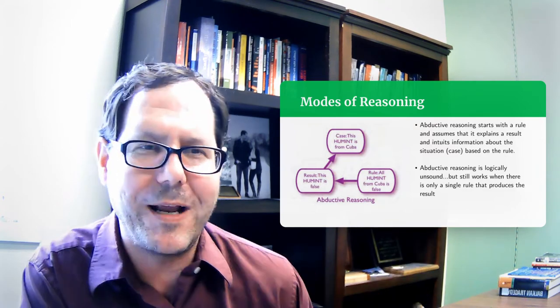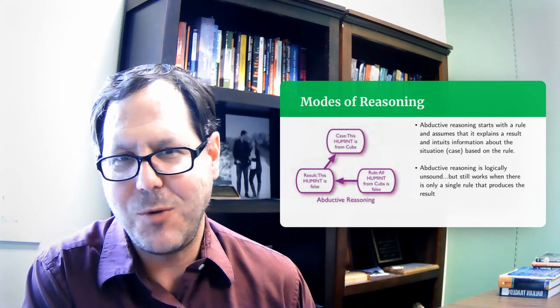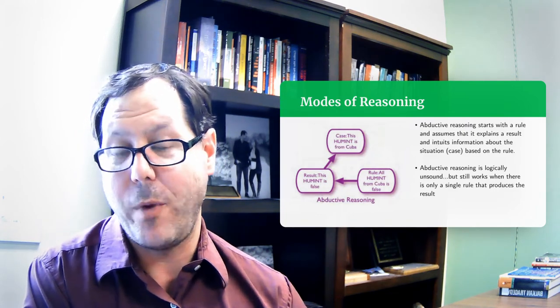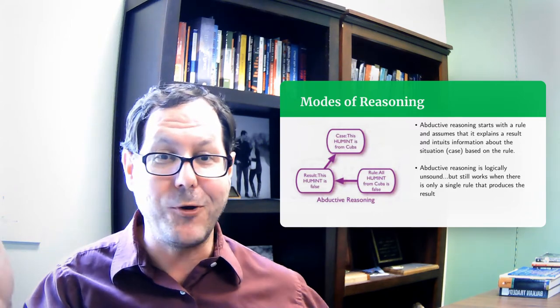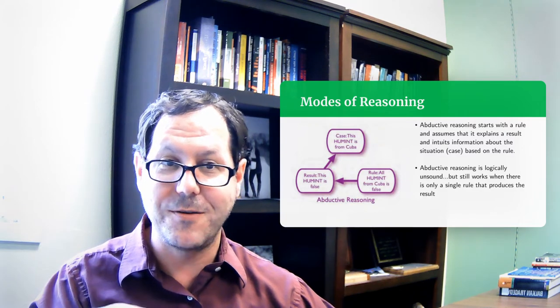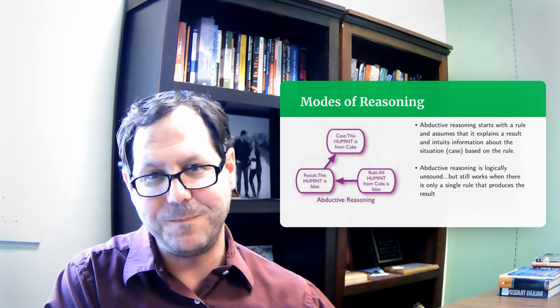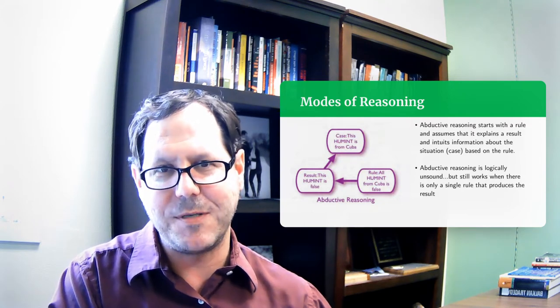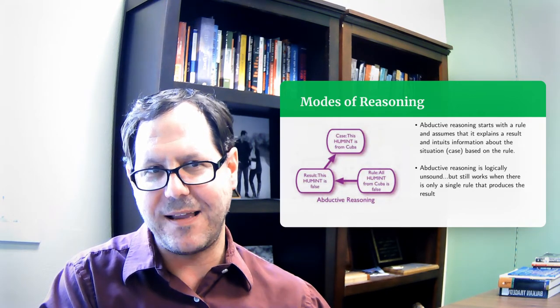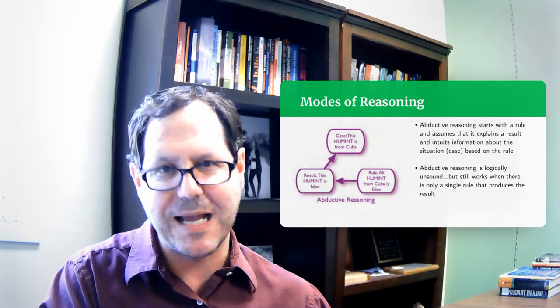But it ends up being a set theory problem. It assumes that there's only one way to get false human intelligence. That false human intelligence can't be coming from Mexico, or Poland, or Canada. That it can only come from Cuba. And if that's true, if human intelligence everywhere else is accurate and good and right, then by telling me this intelligence is false, and I have a rule that human intelligence from Cuba is false, I'm correct in intuiting it's probably from Cuba. But that's rarely the world we live in. Oftentimes there are more than one pathways to a particular outcome. This can really lead us astray in abductive reasoning, where we can just flat out be wrong nine times out of ten.